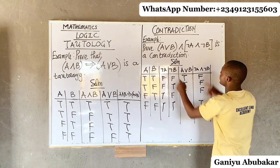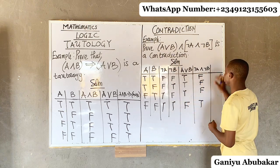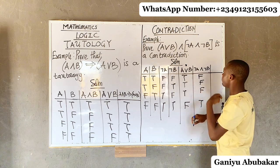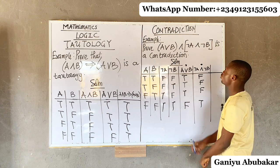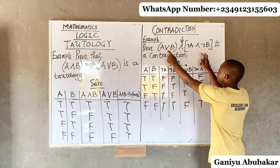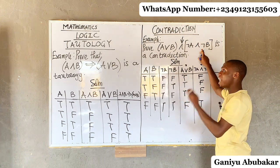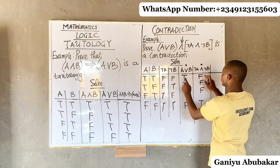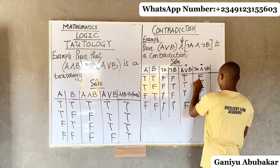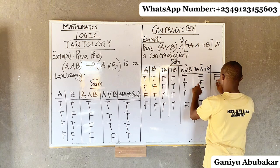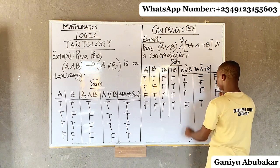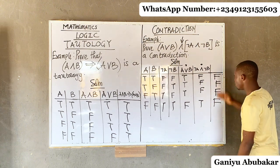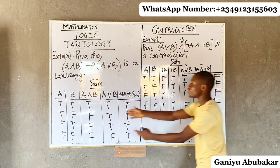Now combining (A OR B) AND (negation A AND negation B) using the AND connective. For AND, at least one false makes false. Combining: true AND false becomes false; true AND false becomes false; true AND false becomes false; false AND true becomes false. The end product is false, false, false, false — this is called a contradiction.